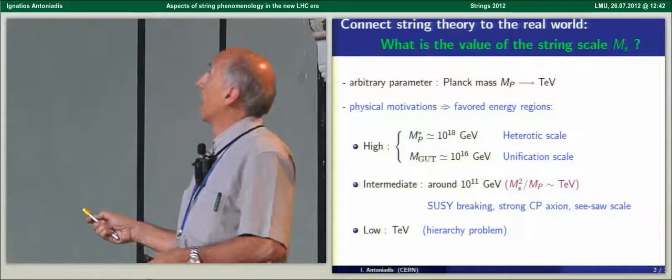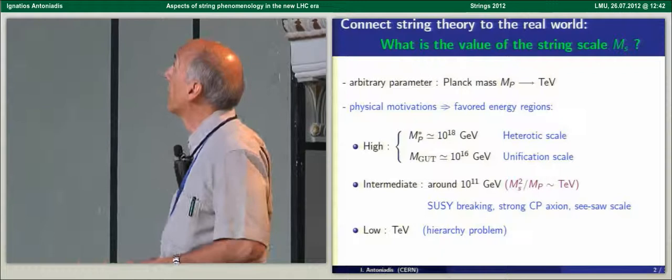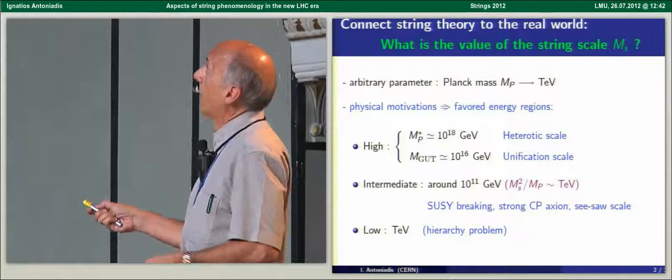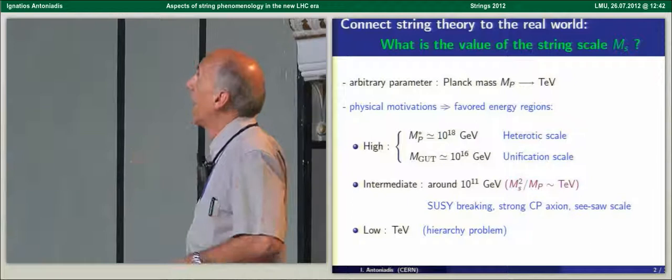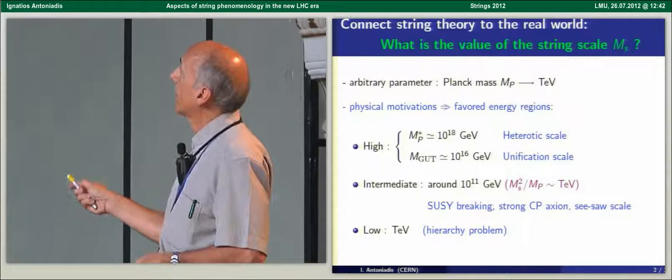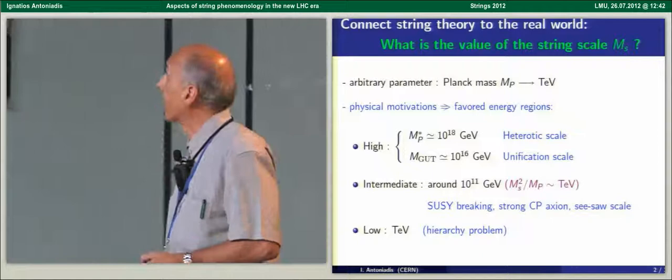Which now we know is an arbitrary parameter that can be anywhere between Planck scale and TeV. And typically from physical motivations, I can imagine three possible reasons. High scale around Mp ≈ 10^18 GeV related to unification. Intermediate scale around 10^11 GeV related possibly to SUSY breaking, strong CP axion, see-saw scale. And then low scale TeV as an alternative to supersymmetry for the hierarchy problem.